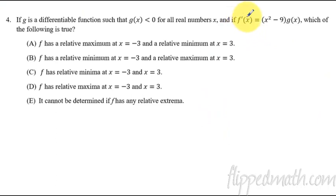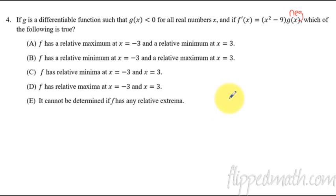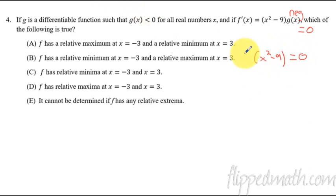Number four is kind of an interesting one. They give us the derivative: f prime of x equals x squared minus nine times g of x. We don't know what g of x is, but we know it's always less than zero — so g of x will always spit out a negative number. Since there's nowhere this derivative doesn't exist, we figure out when it equals zero. G of x will never equal zero, so let's take x squared minus nine equal to zero — that gives x equals plus or minus three. So negative three and three are our critical points.